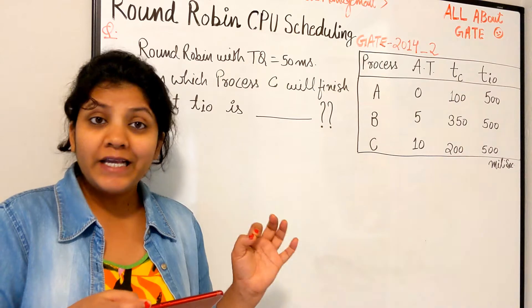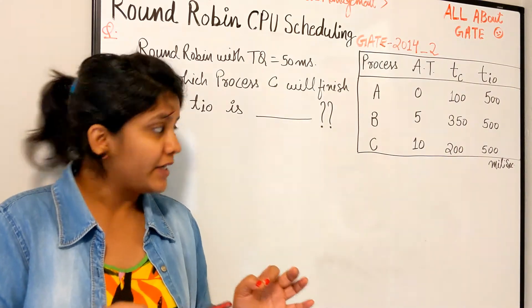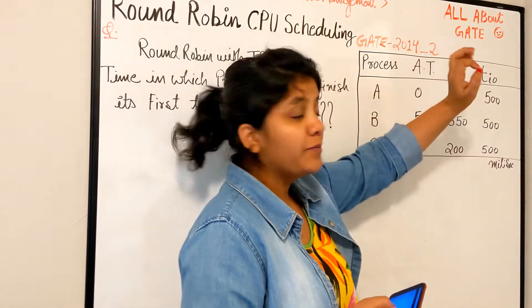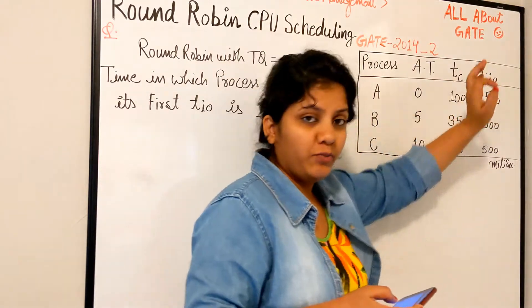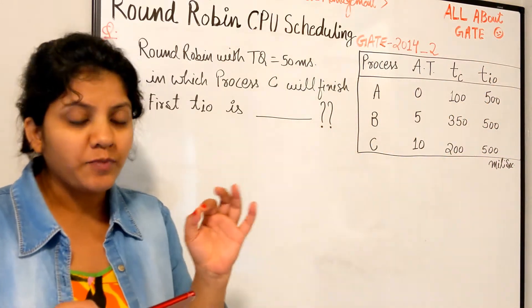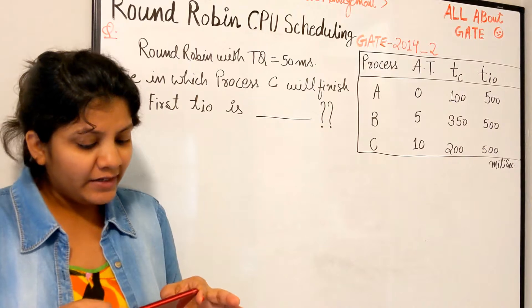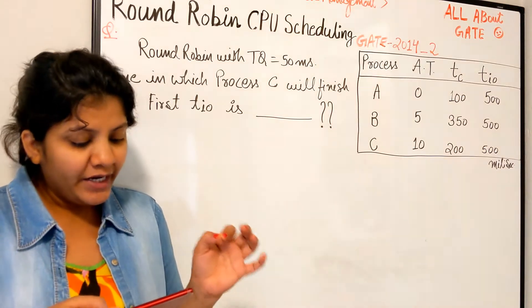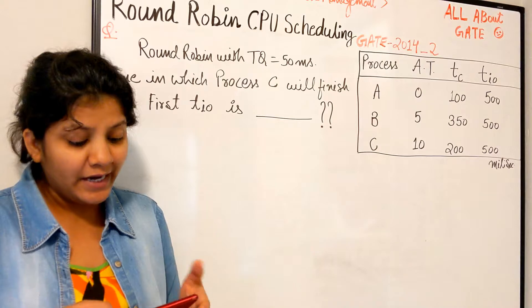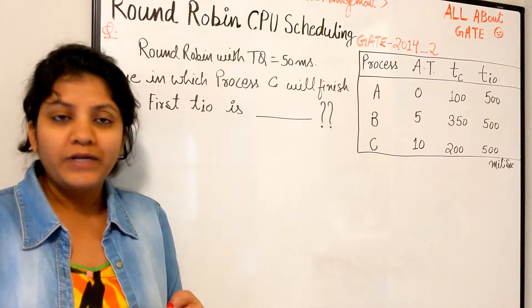The TC is the CPU computation, TIO is the input-output computation. Each process is performing this, right? And after performing TC, it initiates a single input-output operation that lasts TIO milliseconds.